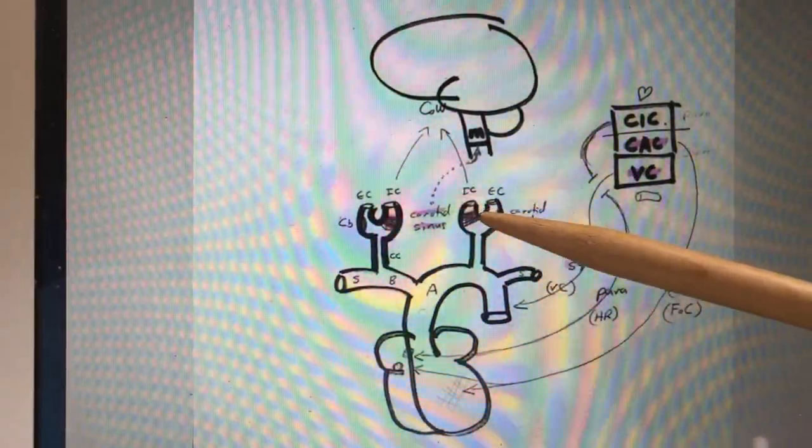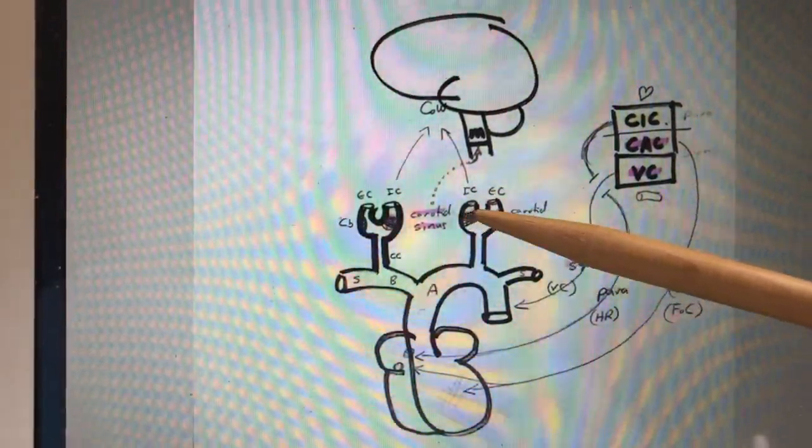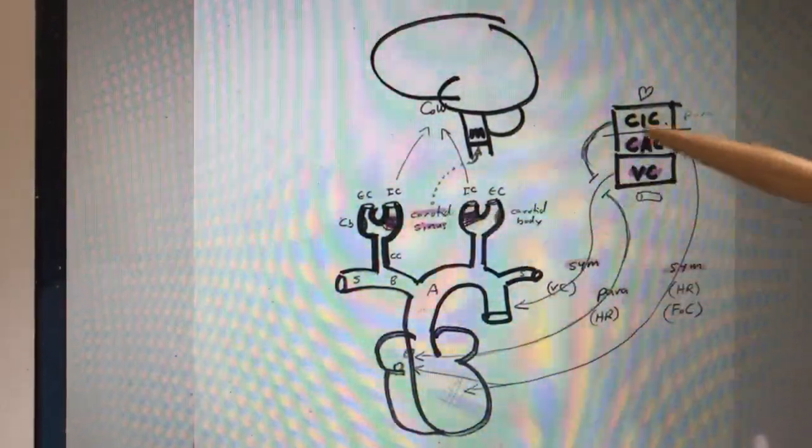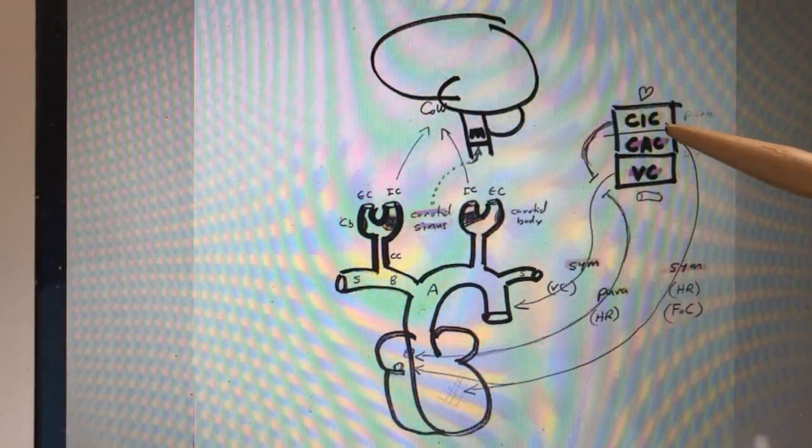The carotid sinuses, if there is excess blood pressure, they bulge outward. They will send signals to the medulla of the brain, specifically to the CIC, the CAC, and the VC.